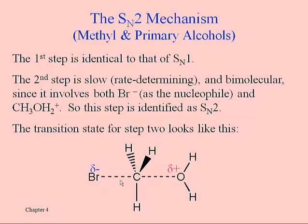If the bromine tries to come in on the same side as where the water is, the reaction doesn't complete itself. So this requires an orientation that the SN1 reaction does not, and so SN2 reactions are slower. Therefore, methyl alcohol and primary alcohols are always going to react slower compared to the kinds of alcohols that can form those carbocations.